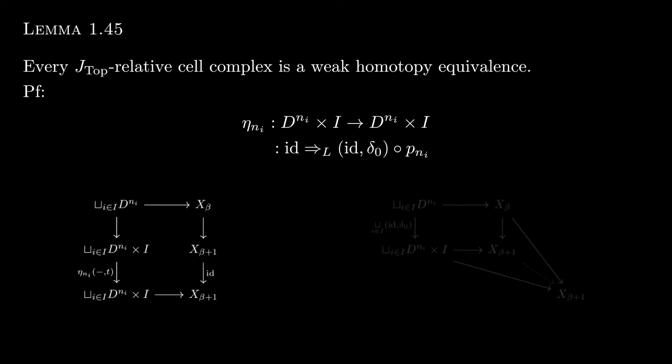So to see this, let's stack our diagrams again and then rearrange it and let's apply the universal property obtaining an induced map from X-beta plus 1 to X-beta plus 1. So at t equals 0, eta-n-i on the left is just the identity. So that means both maps on the right side from D-n-i cross I to X-beta plus 1, both the diagonal and the horizontal one, are exactly the same. So the red map is just the identity.